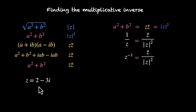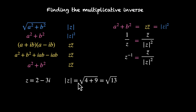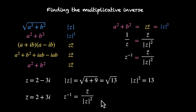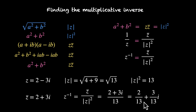Let's take a quick example. If z = 2 − 3i, find its multiplicative inverse. Mod z = √(4 + 9) = √13, so |z|² = 13. And z-bar = 2 + 3i. Therefore z⁻¹ = (2 + 3i) / 13 = 2/13 + (3/13)i. This is the real part and imaginary part of the reciprocal of z.